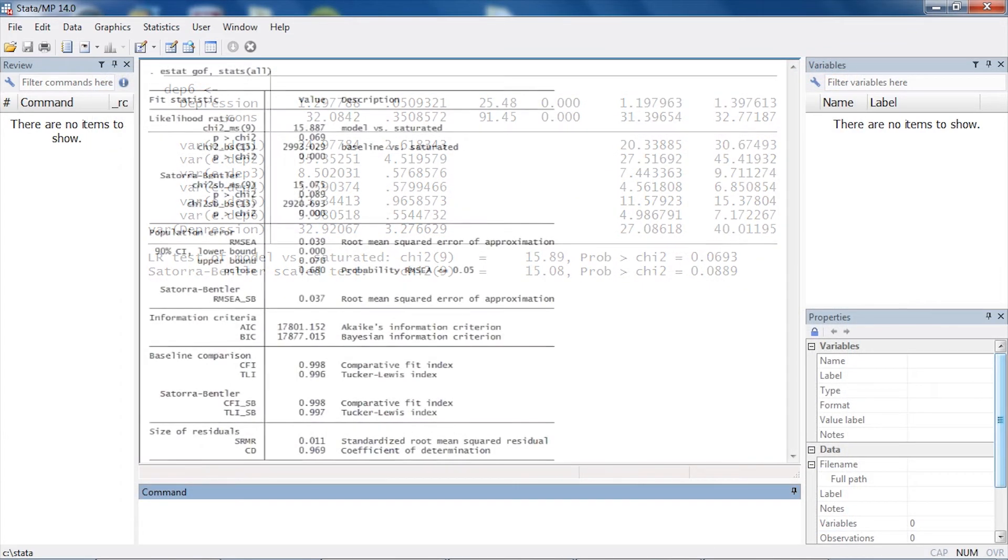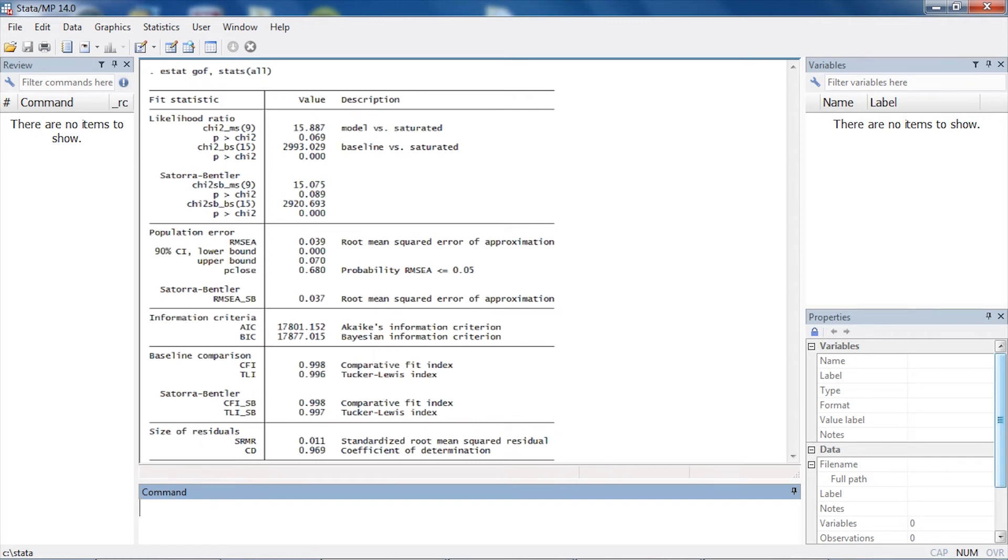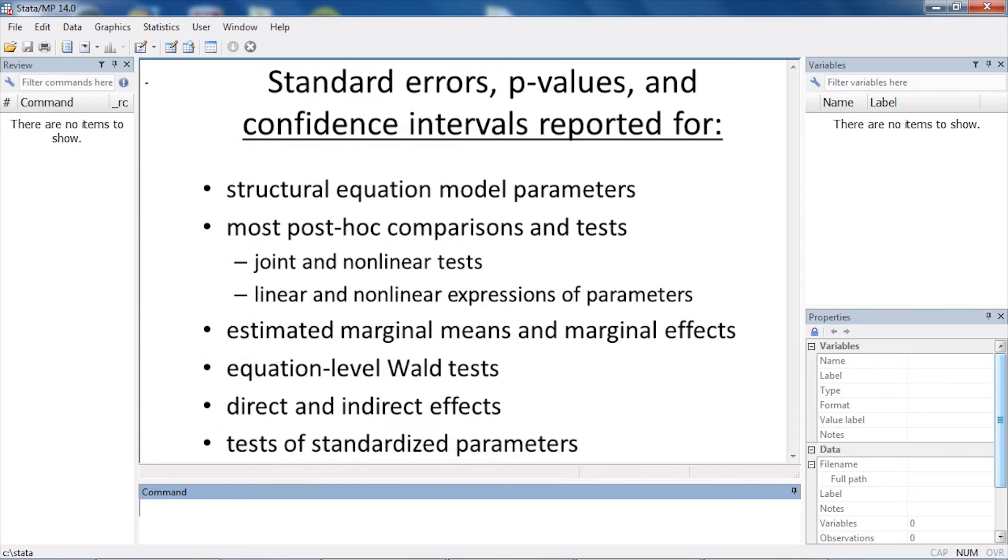Because many other goodness of fit statistics are derived from the model Chi-Squared, they too become robust to non-normality. And the same adjustment that gives you the Satora-Bentler Test makes many other things robust to non-normality as well.